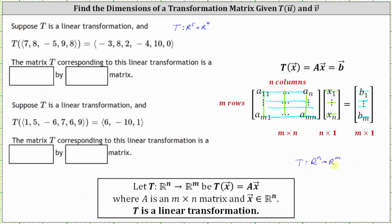So for our first example, we are mapping from R5 to R6, which means the input vectors or the vectors in the domain can be written as five by one column matrices, and the vectors in the co-domain or output can be written as six by one column matrices. And therefore matrix A must be a six by five matrix.